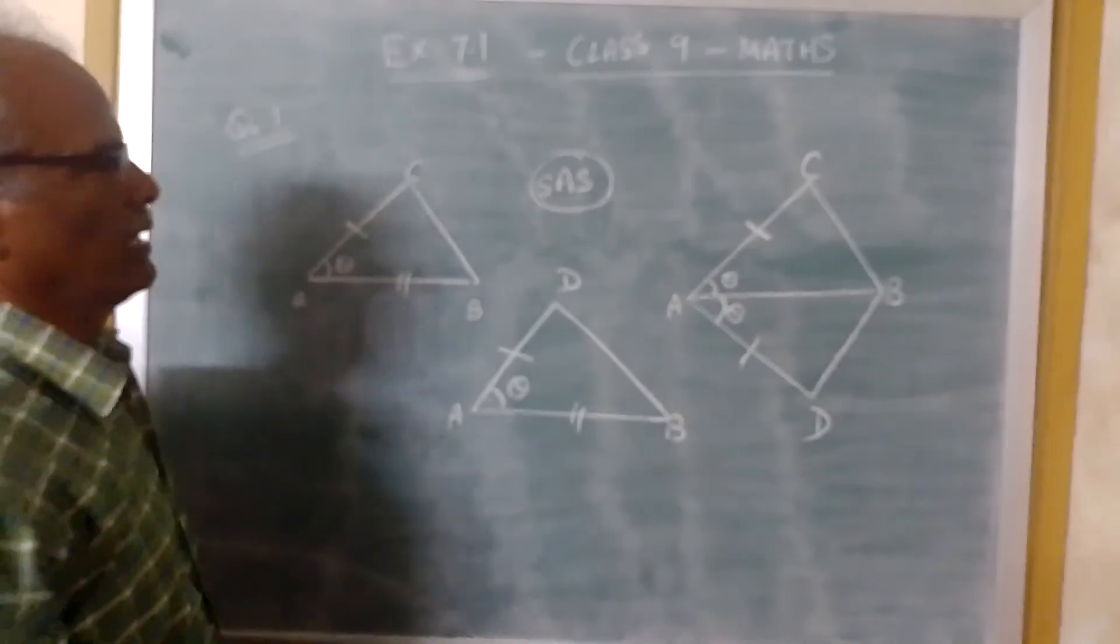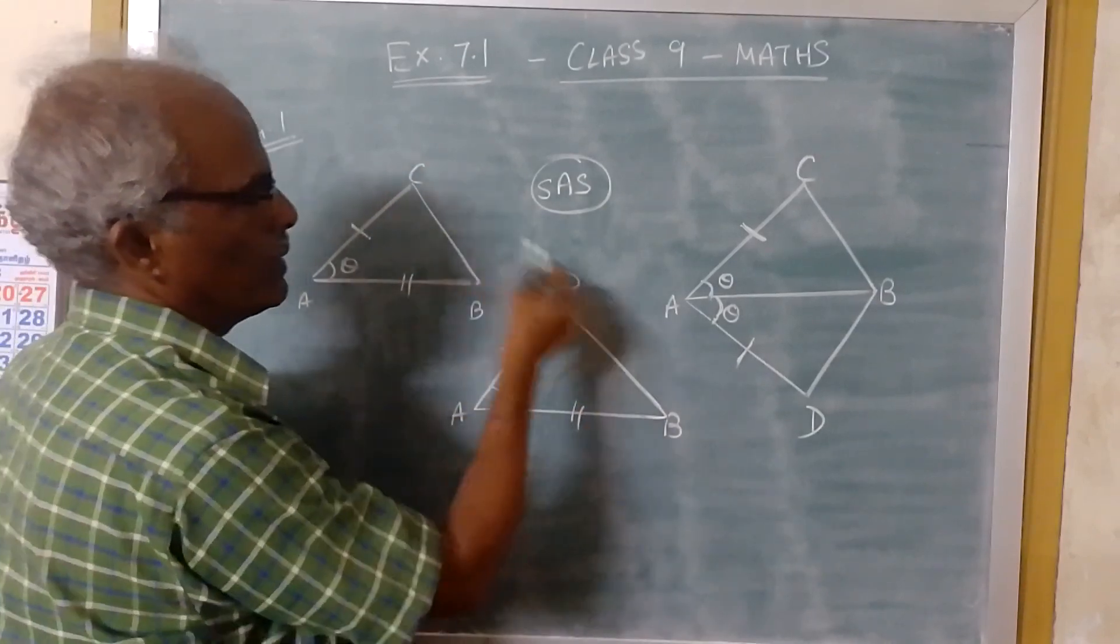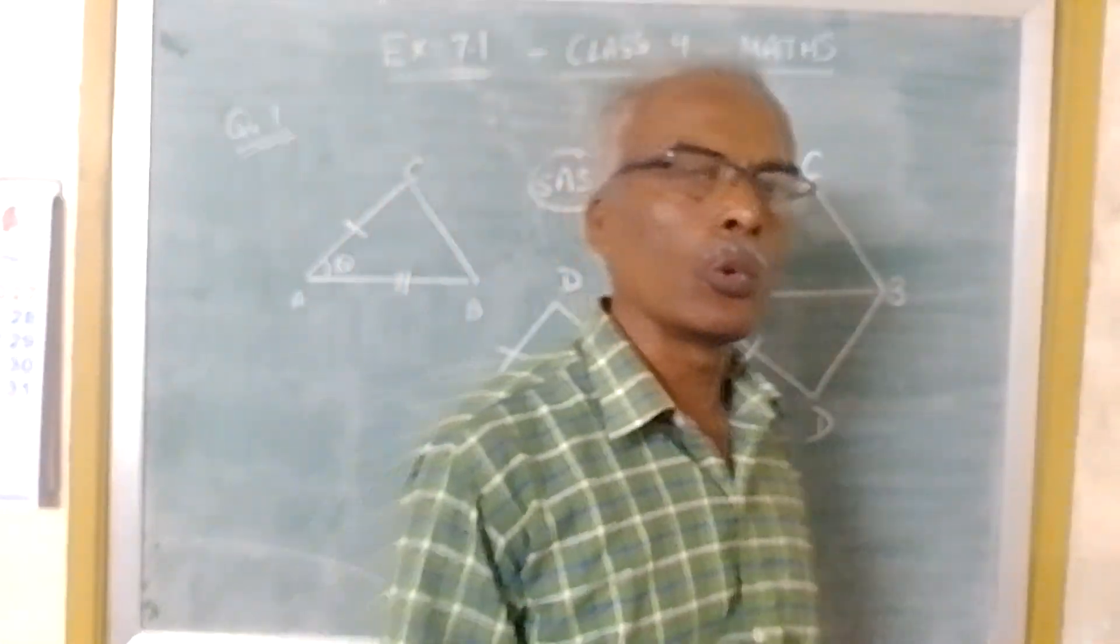Side, angle, side. Therefore, we can say that ABC and ABD are congruent triangles.